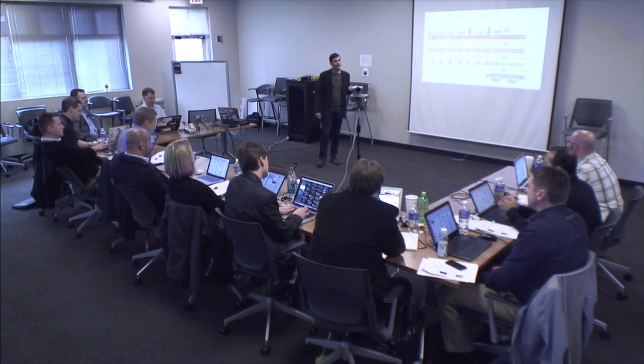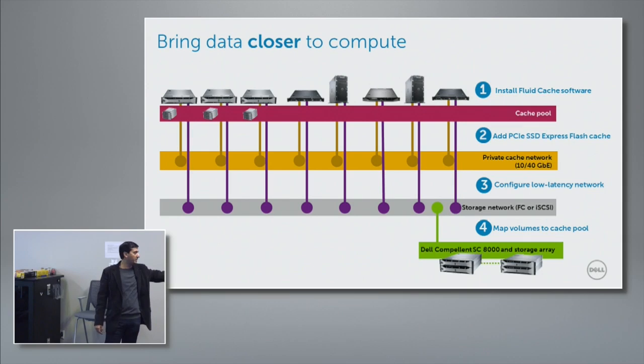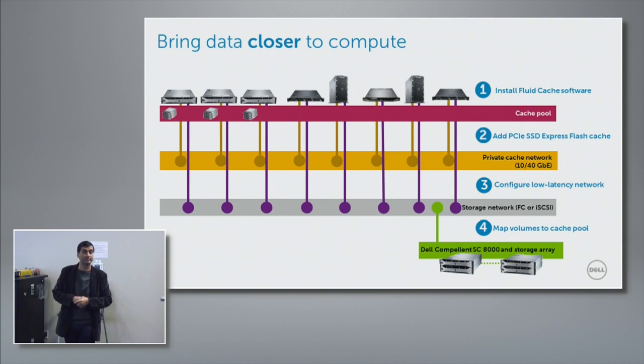In a three-node setup, can you tolerate two failures? You can survive two failures, but the system will throw errors. With two nodes down, Fluid Cache switches from write-back to write-through mode — new writes won't be acknowledged until they've made it all the way to storage. You won't lose data, but performance degrades gracefully.